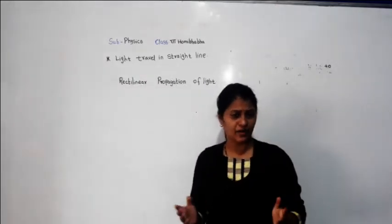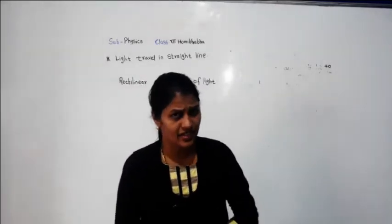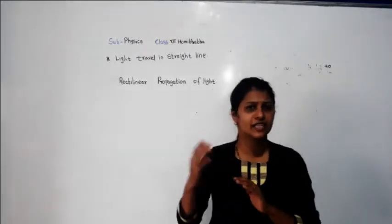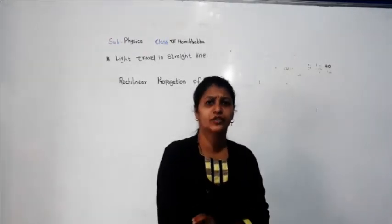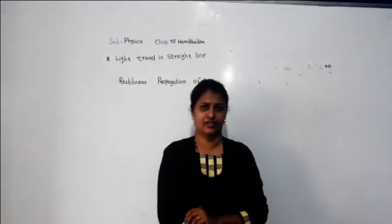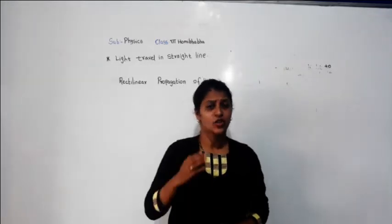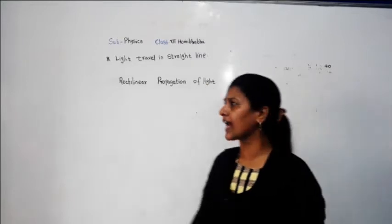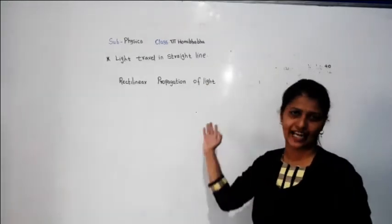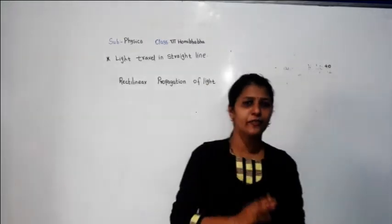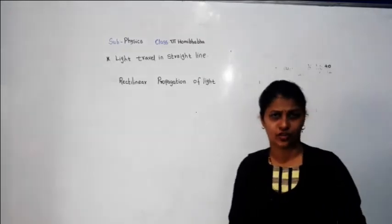Can you tell me what is meant by 'light travels in a straight line'? Now we will see — sunlight moves directly to the earth, am I right? It travels in a straight line. That phenomenon is called the rectilinear propagation of light.